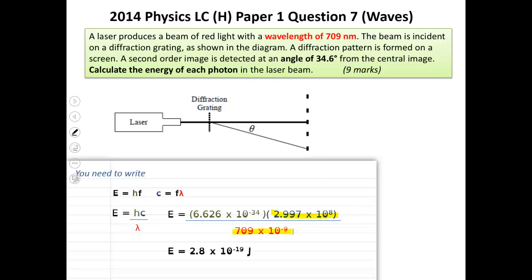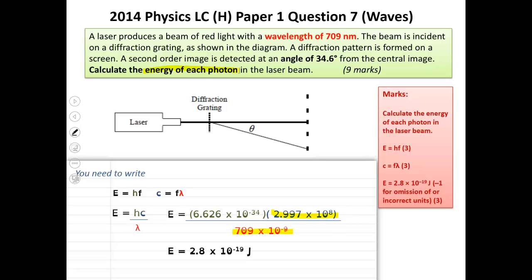And when you get all that out, there you go, it's a tiny amount of energy, 2.8 times ten to the minus 19 joules, absolutely minuscule, but then it's the energy of a photon, so it kind of makes sense. There's the marks here for that.